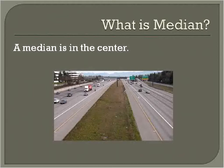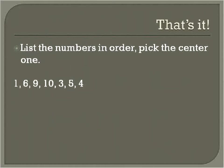The second type of average is called the median. The mean is the average; the median is the center. Just like if you're driving down the road, the strip in the middle is called the median. We're just looking for whatever is right in the center. You list the numbers in order and pick the number in the center — that's all the median is.